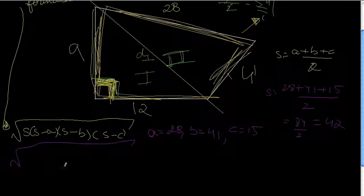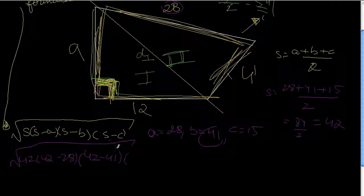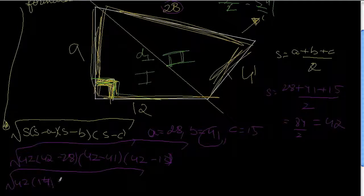So I calculate this — the semi-perimeter S is 42. That's S minus A, which is 28, so 42 minus 28 is 14. Times S minus B — 42 minus 41 is 1. Times S minus C — 42 minus 15 is 27. So this is going to be equal to the square root of 42 times 14 times 1 times 27.